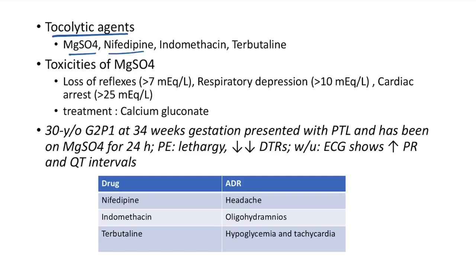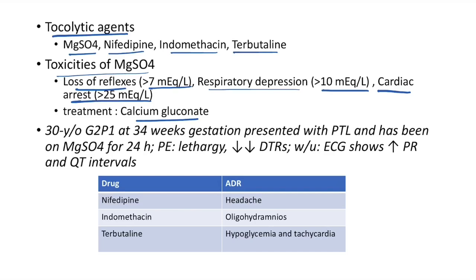Tocolytic agents include magnesium sulfate, nifedipine, indomethacin, and terbutaline. Toxicities of magnesium sulfate: loss of deep tendon reflexes when >7 mEq/L, respiratory depression when >10 mEq/L, and cardiac arrest when >25 mEq/L. Treatment for magnesium sulfate toxicity: give calcium gluconate.